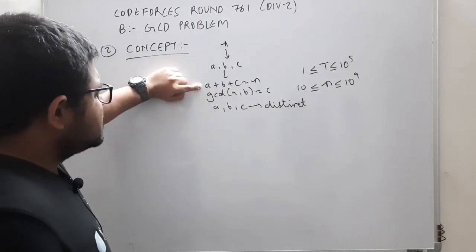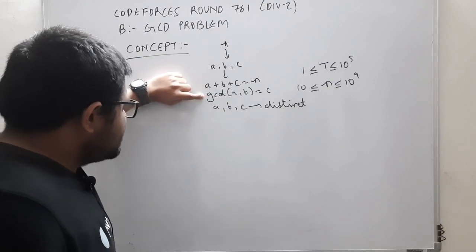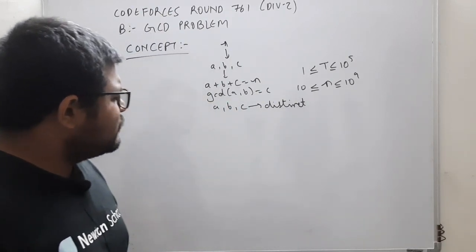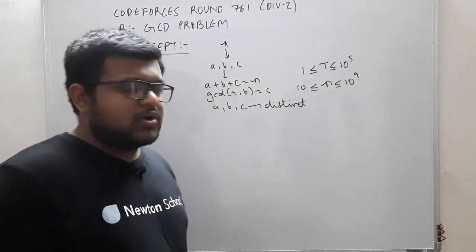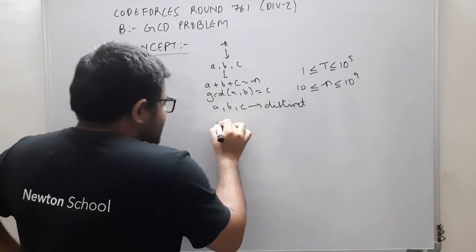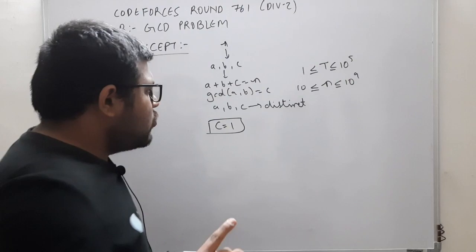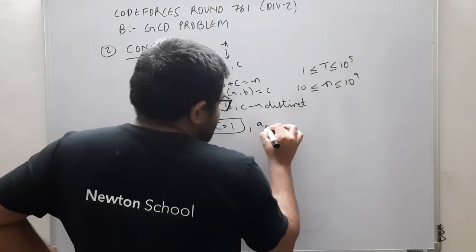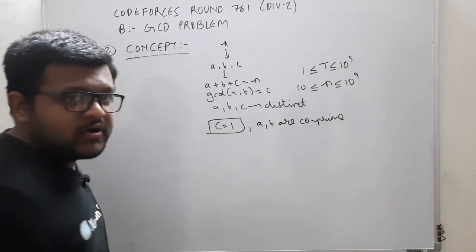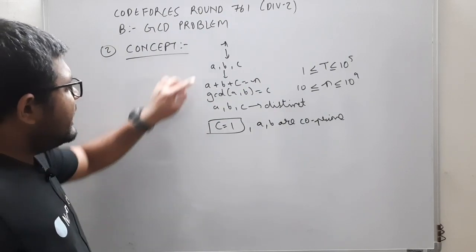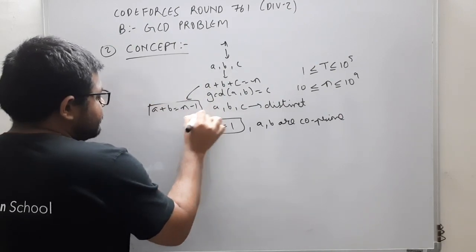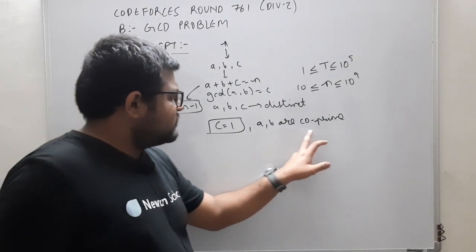We have two equations, so let's deduce something. If GCD(a, b) = c, one thing I can do is set the GCD of the two numbers to 1. If GCD(a, b) = c, and I set GCD(a, b) = 1, then the value of c is determined — it's 1. Secondly, I now know that a and b are co-prime. Since they are co-prime, their GCD is 1, and now from a plus b plus c = n, we get a plus b = n minus 1.